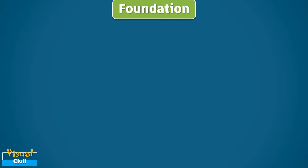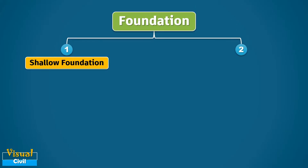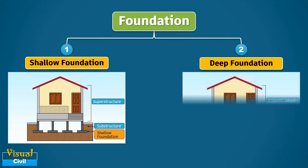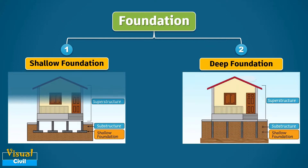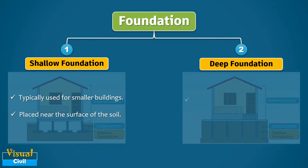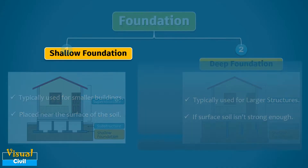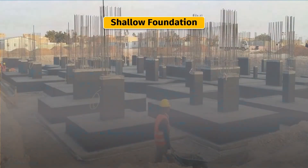Generally, foundations are categorized into two main types: shallow foundation and deep foundation. Shallow foundations are typically used for smaller buildings and are placed near the surface of the soil, while deep foundations are used for larger structures or when the surface soil isn't strong enough. Now, let us try to understand shallow foundations.